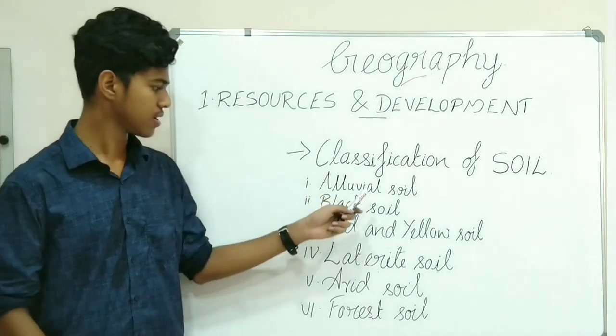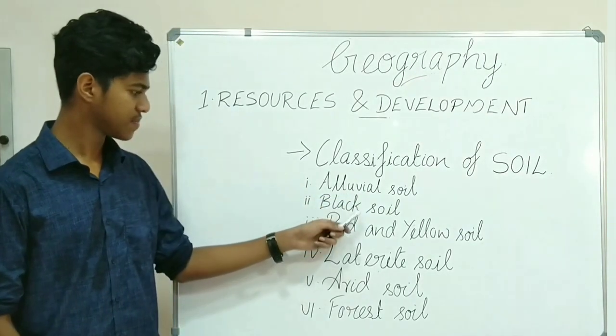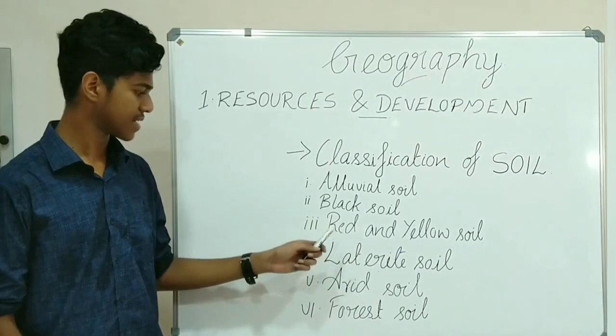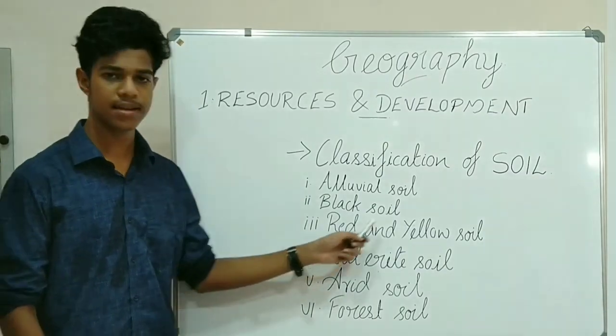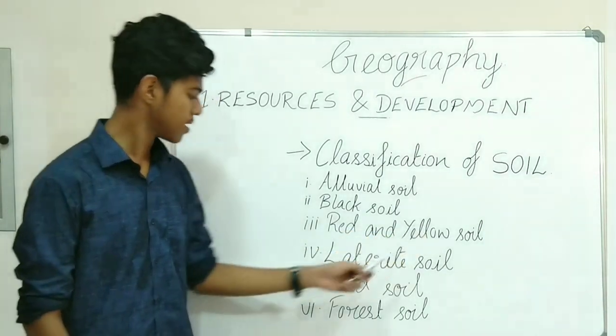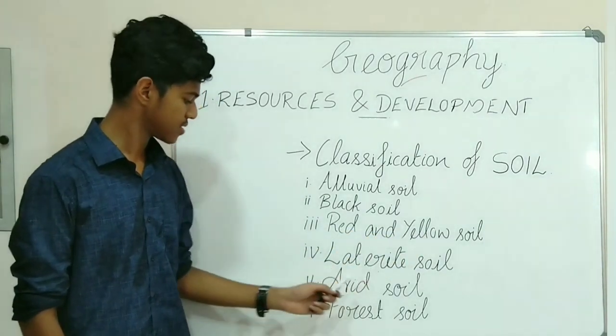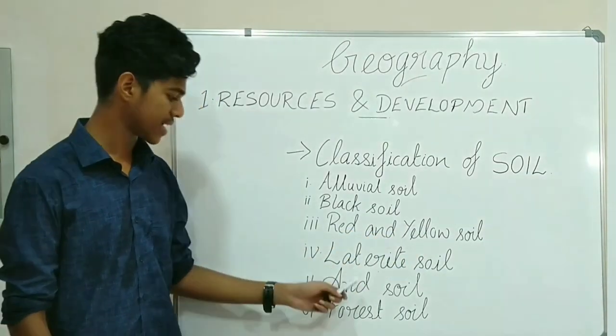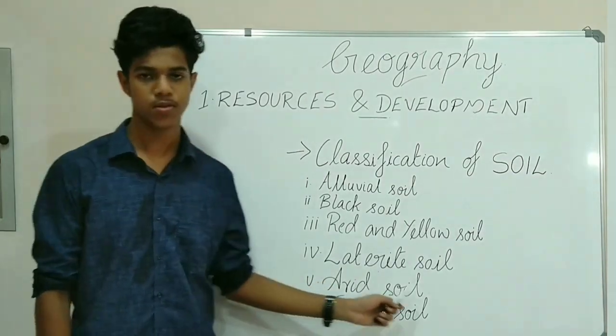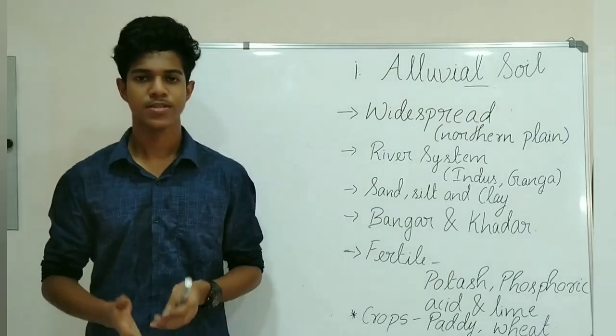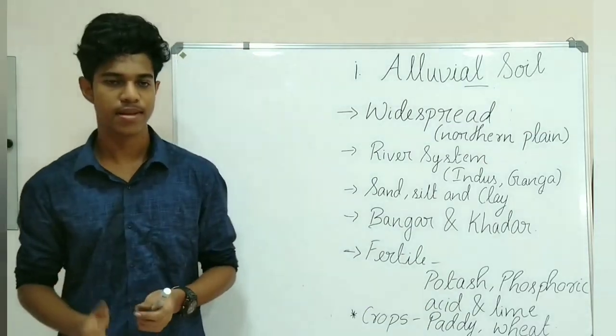In our country there are mainly six major types of soil. The first is alluvial soil, the second is black soil, the third is red and yellow soil, the fourth is laterite soil, the fifth is arid soil, and the last one is forest soil.